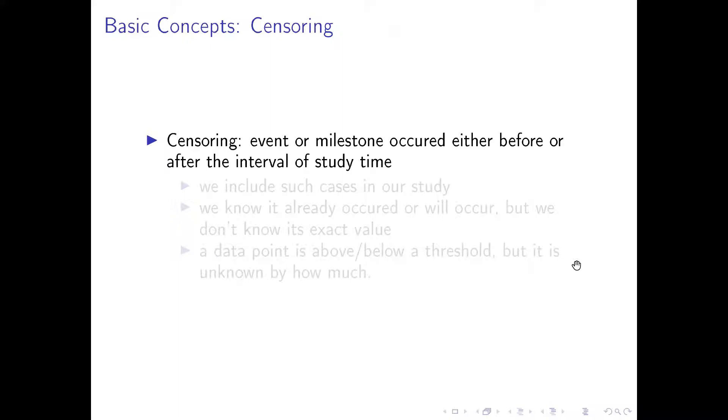Censoring, when censoring occurs, that means the event or milestone event occurs either before or after the interval of study time. We include such cases in our study. So we do not drop these cases. Now, this is not a sample selection issue. Rather, this is an issue about missing some information.